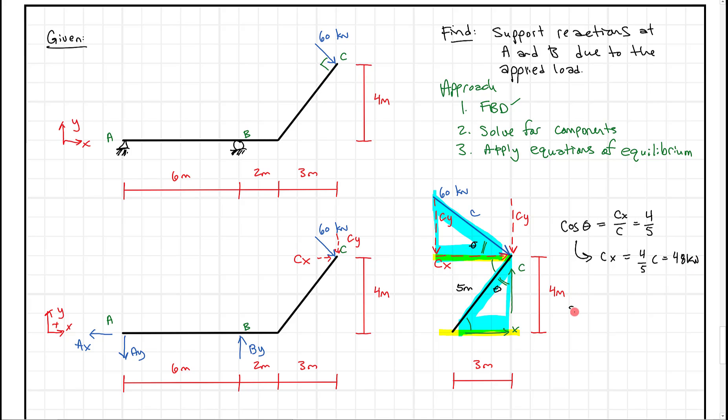Similarly, if we apply our sine of theta, if we look at the top here, the sine of theta is the opposite, or Cy, over C. And likewise, on the bottom, the sine of this theta is going to be three meters over five. Because they're the same, we can make them equal to each other, and we can solve. We get Cy equals three-fifths of C, which is going to be three-fifths of 60 kilonewtons. From that, we get 36 kilonewtons.